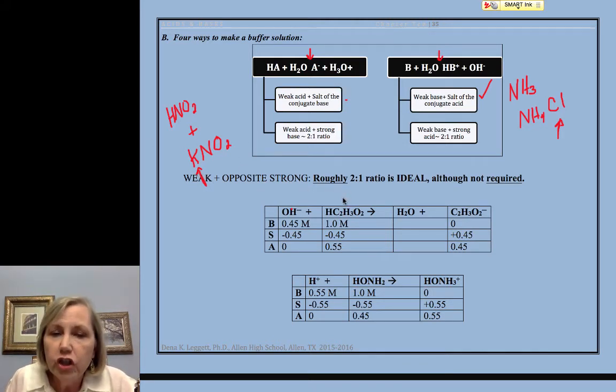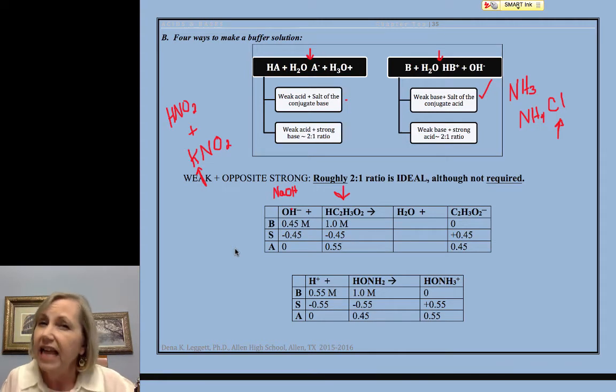Now, the other way is to start with your weak acid and neutralize a good portion of it. So I can add some sort of strong base, NaOH, KOH, any group one, group two hydroxide except beryllium and magnesium. And I didn't want to do exactly half because I don't want you to think that it has to be half. And do you notice after I do my stoichiometry, my hydroxide is my limiting,